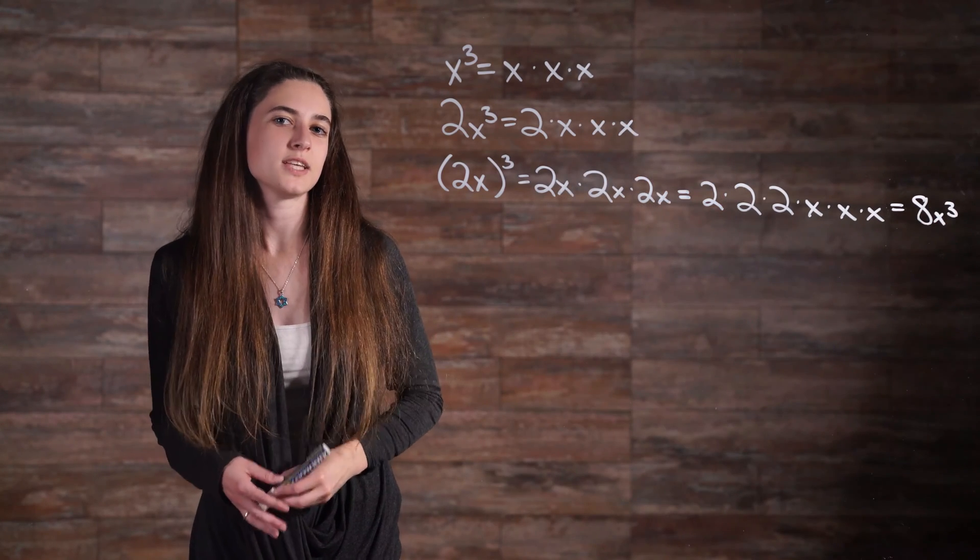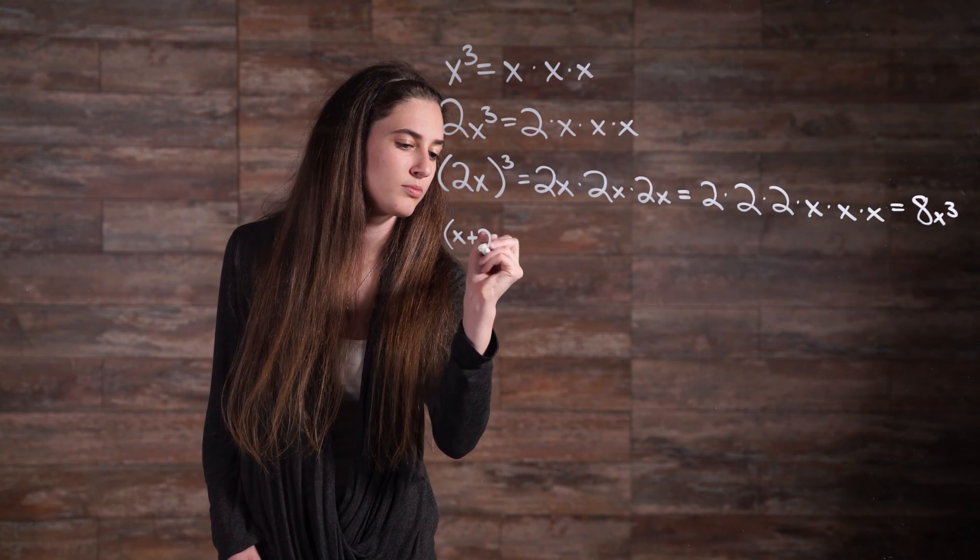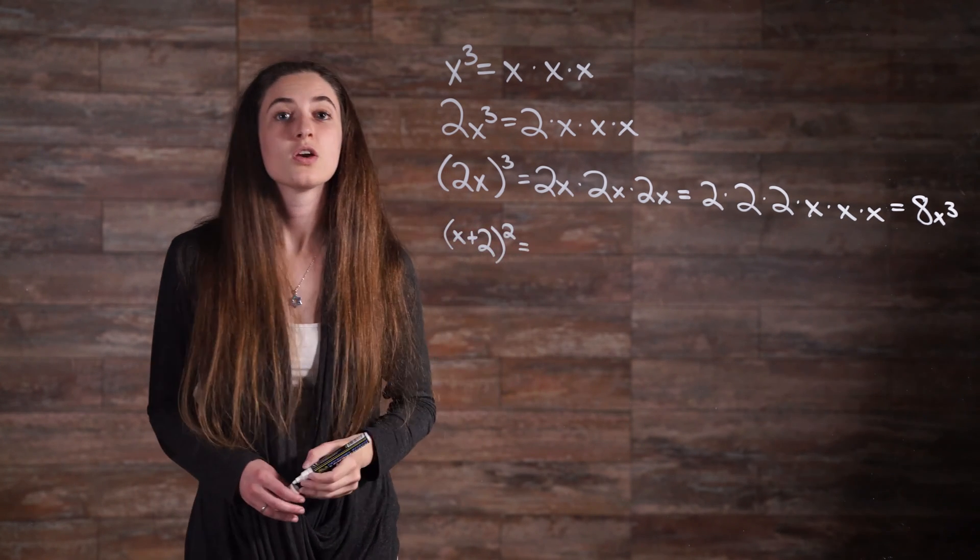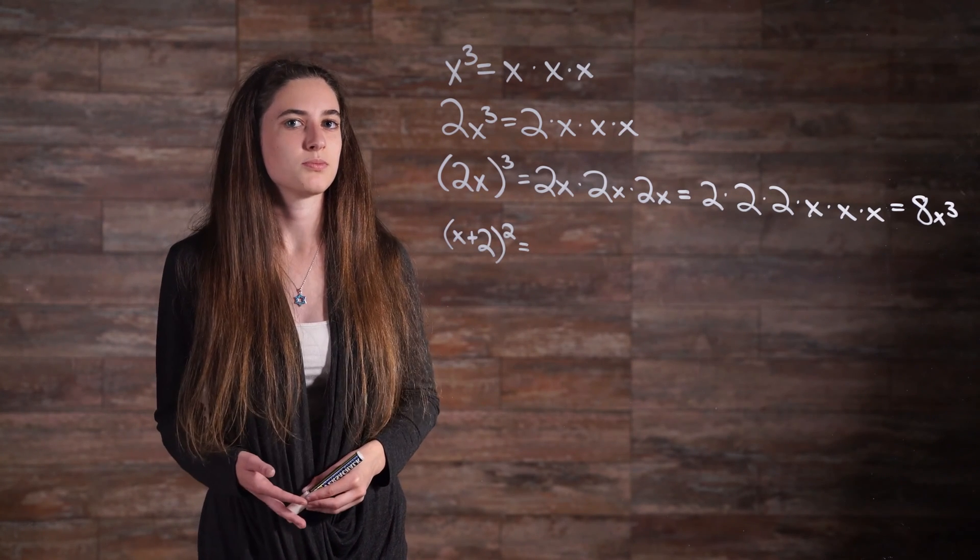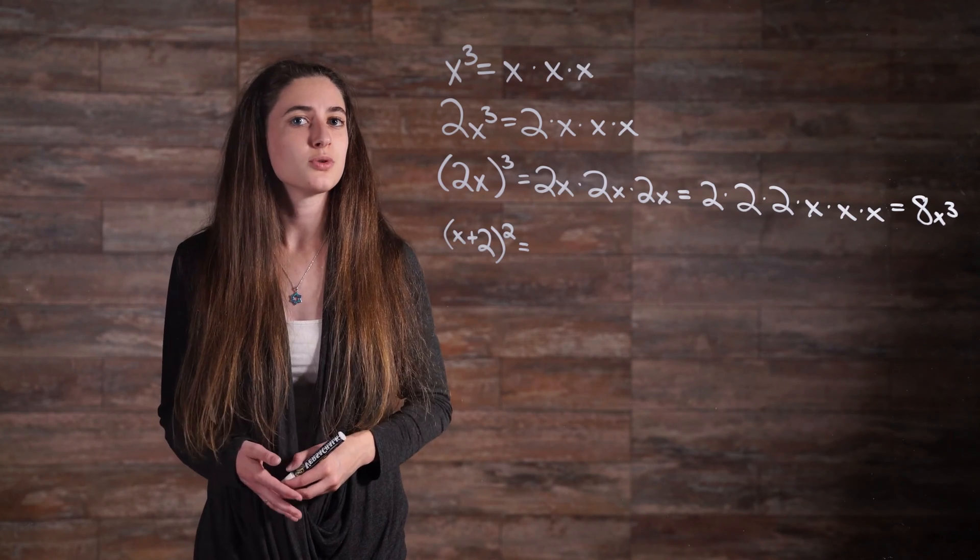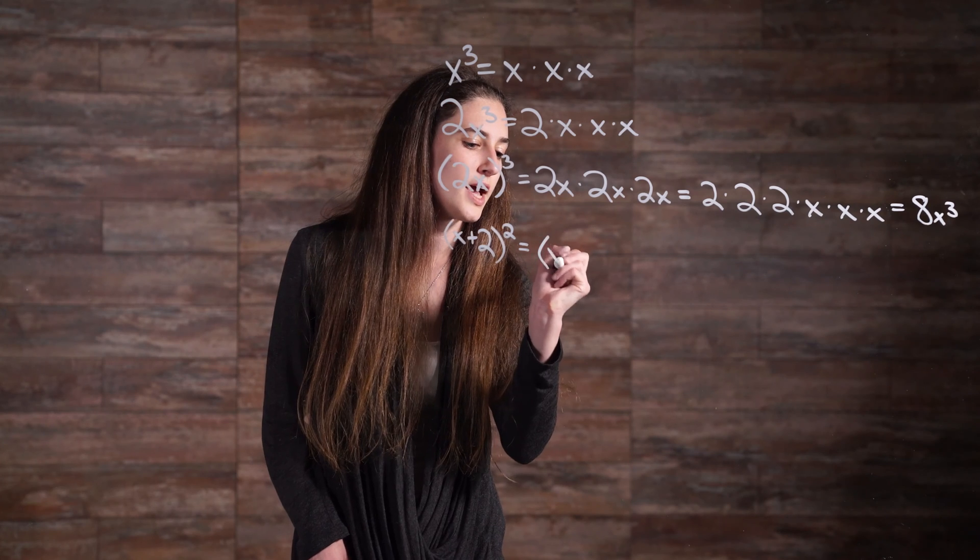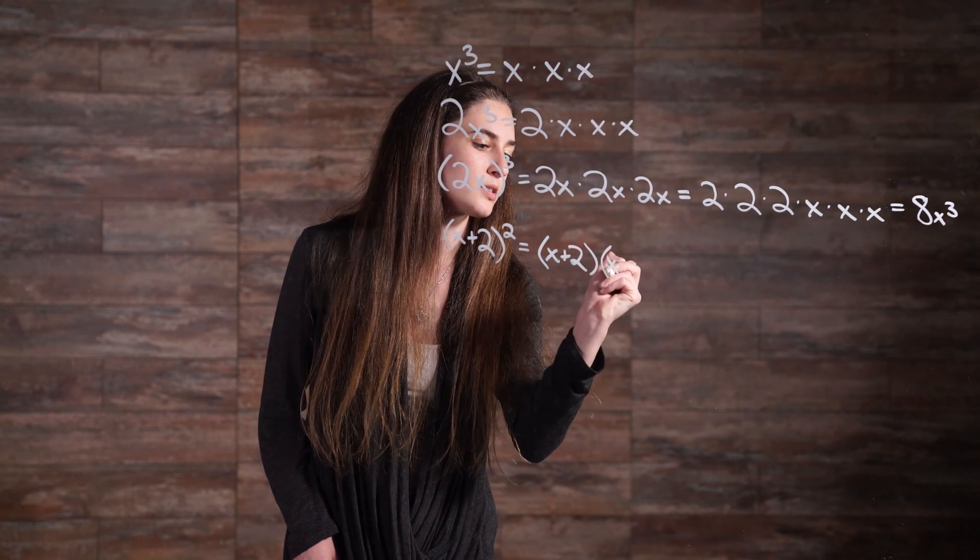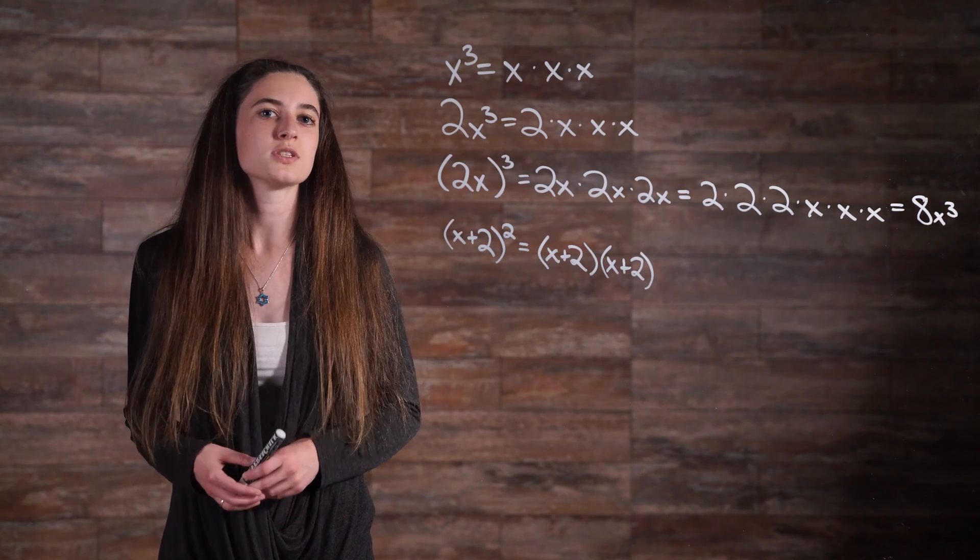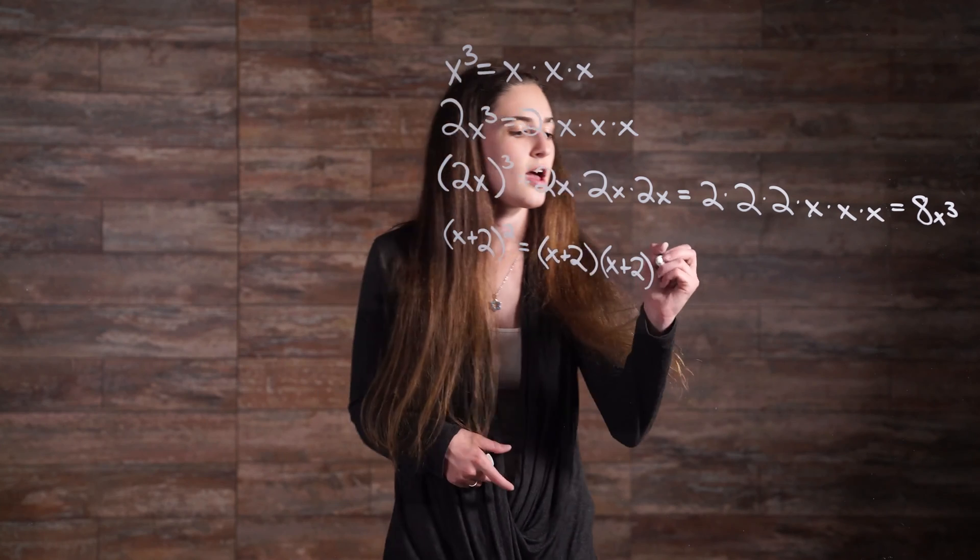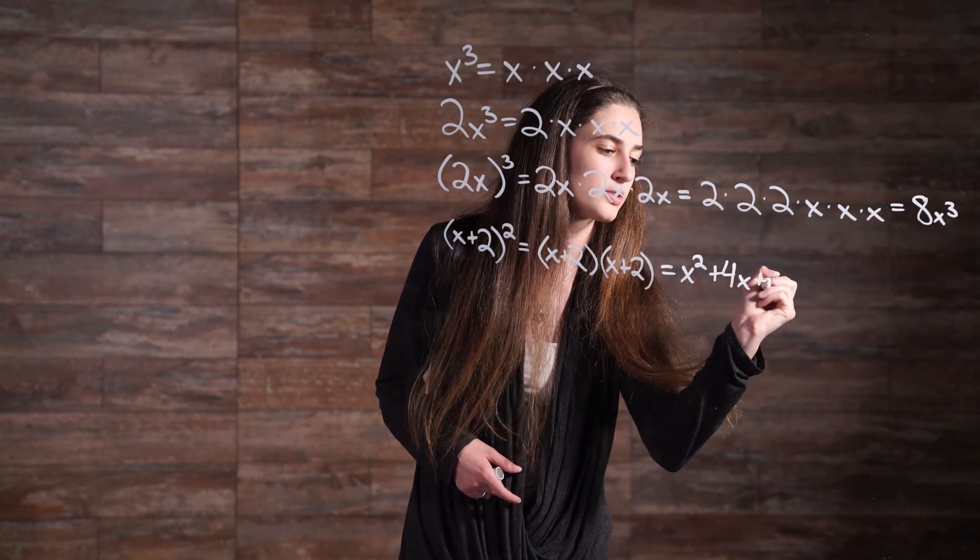Let's try one more example before we go. x plus 2 squared. Once again, the parentheses here are used to define the base to be x plus 2. The exponent of 2 instructs you to multiply this base by itself twice. So it equals x plus 2 times x plus 2. Multiplying these two binomial expressions results in the quadratic expression x squared plus 4x plus 4.